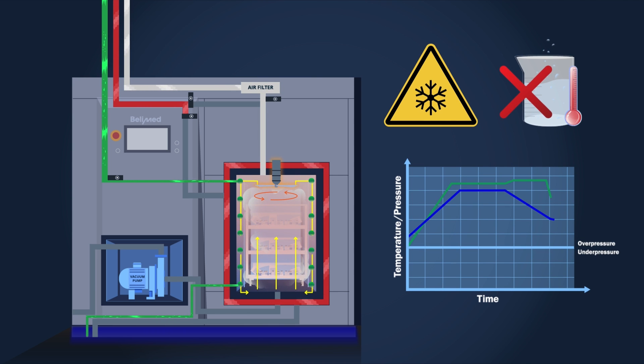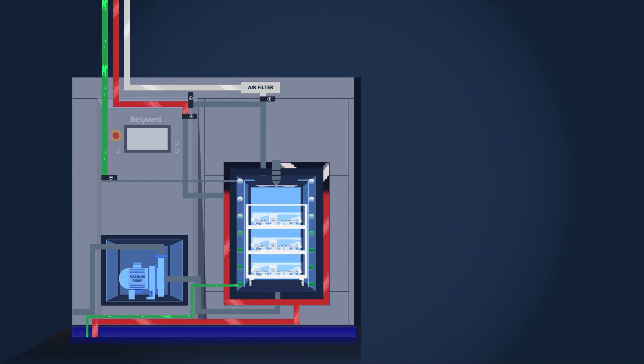Compressed air is put in additionally to increase the pressure and avoid boiling of the liquids during the cooling process. This is the most efficient way of cooling the goods and the sterilizer.